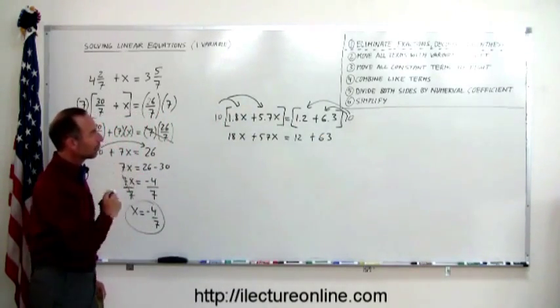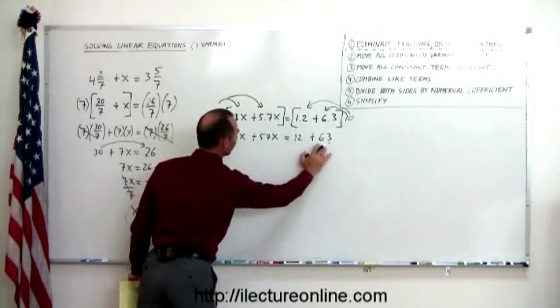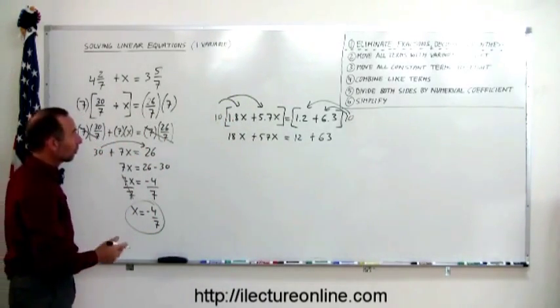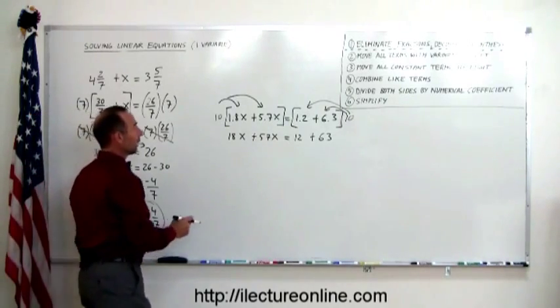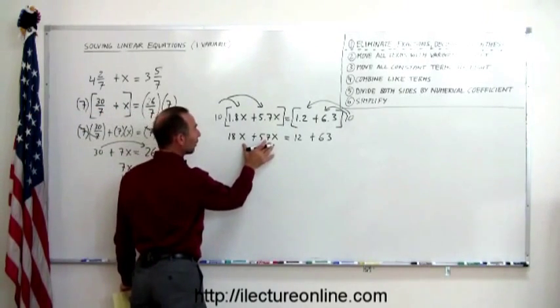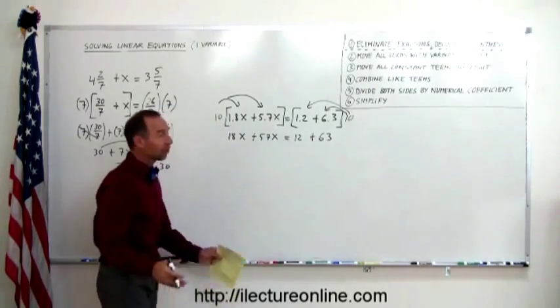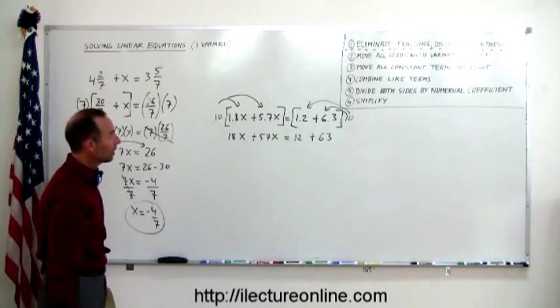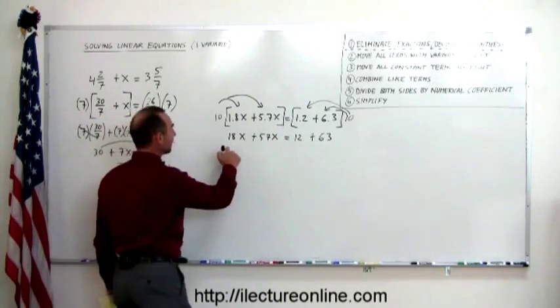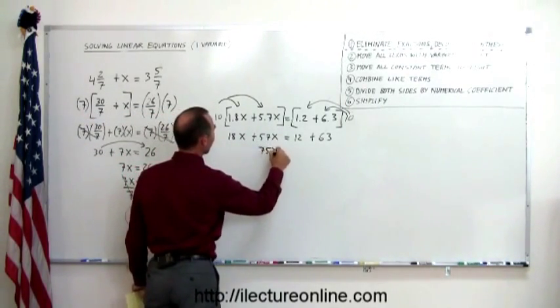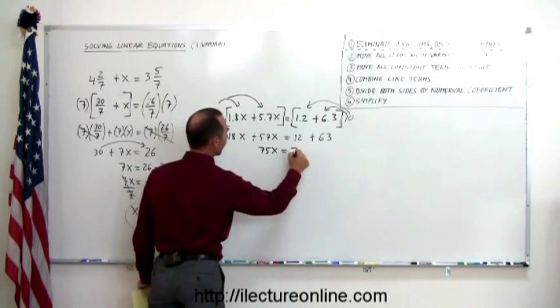Adding like terms together, because now we have an equation that has no fractions, no decimals, and no parentheses. We don't have any terms with the variable on the right side. They're already all on the left side. We have all the constant terms on the right side. So we can skip step 2 and 3. Combine like terms. Step 4. 18 plus 57, that's 75x equals 12 plus 63 is 75.